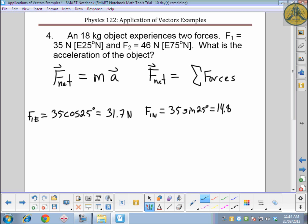That works out to be about 14.8 newtons. And we'll do the same thing with the second force. It's got a component in the east. It's 46 cosine 75, giving you 11.9 newtons. And its second component in the north, 46 sine 75 degrees, giving us about 44.4 newtons. I'll make that a little clearer.